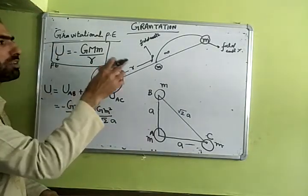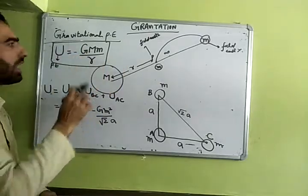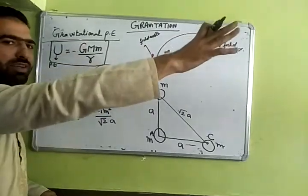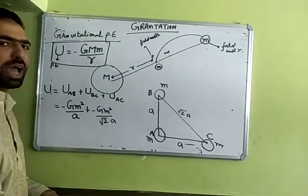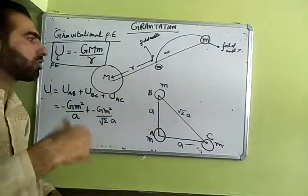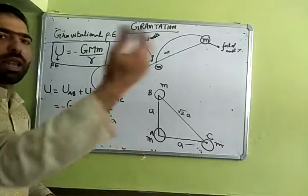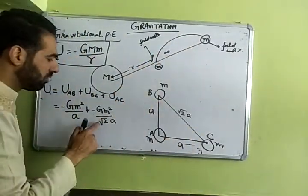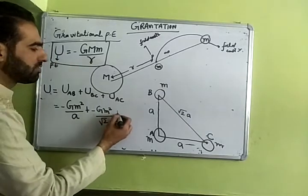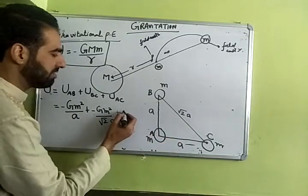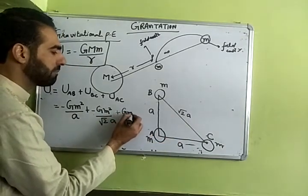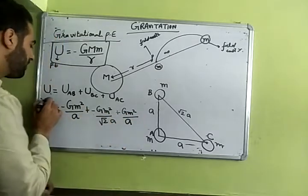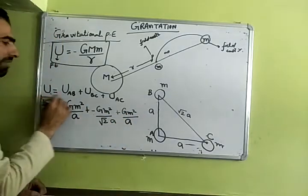That's why the sign comes out to be negative. One more thing: this shows that the system is in a bound state. If it's zero, then it is in a free state. Just as in atoms you've learned, when electronic energy is negative, the electron is in a bounded state; when electronic energy is zero, it is in a free state.